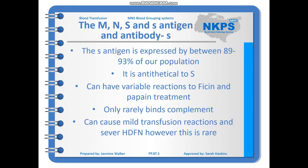The little s antigen is expressed by between 89 and 93% of the population, so the majority of people have little s positive red blood cells. It is antithetical to big S and can also have variable reactions to ficin and papain. Unlike big S, it only rarely binds complement and can cause mild transfusion reactions and severe HDFN, though again this is rare.